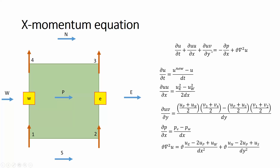The next term is ∂(uv)/∂y — the first derivative in Y of the product uv. For the top face of the control volume, uv is interpolated as ((u_P + u_N)/2) · ((v3 + v4)/2), and at the bottom face as ((u_P + u_S)/2) · ((v1 + v2)/2), divided by dy. The pressure gradient term ∂p/∂x is simply (p_e − p_w) / dx.